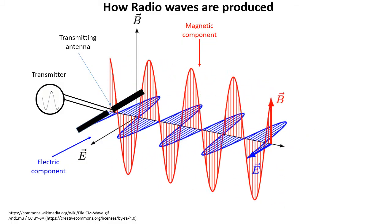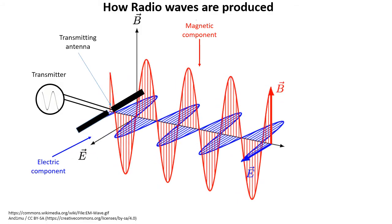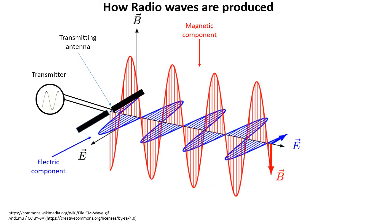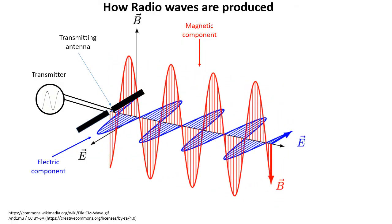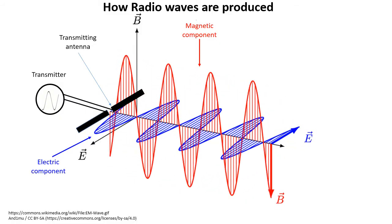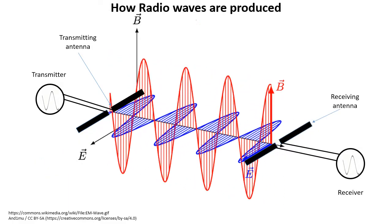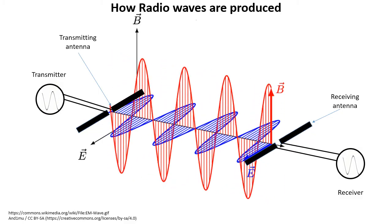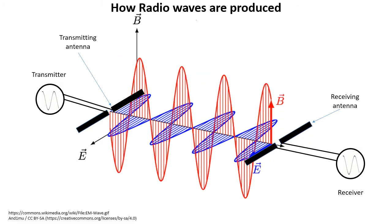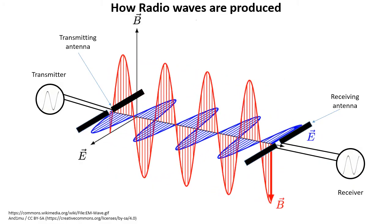Radio waves are also called electromagnetic waves because they are made up of both electric and magnetic components. The electric component E is shown in blue in the diagram, and the magnetic component B is shown in red. The waves are radiated from the antenna at the speed of light, which is 300 million metres per second, or 186,000 miles per second. If we place another antenna attached to a radio receiver at a distance from the transmitter, then when the radio waves strike the receiving antenna, they push the electrons in the metal back and forth, creating small oscillating currents which are detected by the receiver.